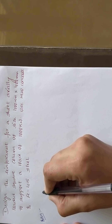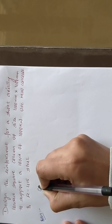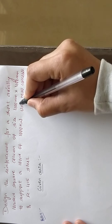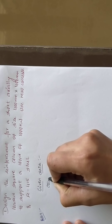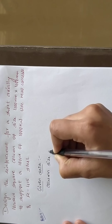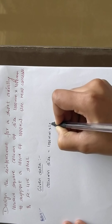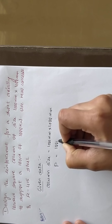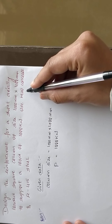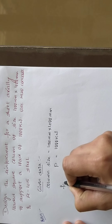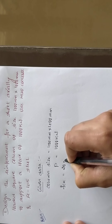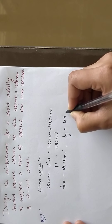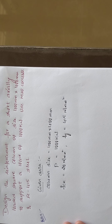The first step is to write down the given data. Column size: 400 mm by 400 mm. The load P is 1000 kilo Newton, that is the axial load. M20 concrete and Fe415 steel are given — characteristic strength of concrete fck = 20 N/mm², and characteristic strength of steel fy = 415 N/mm².